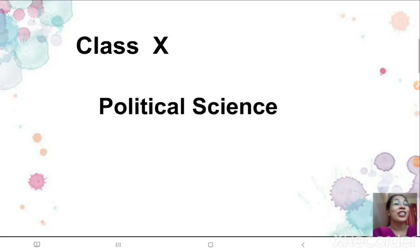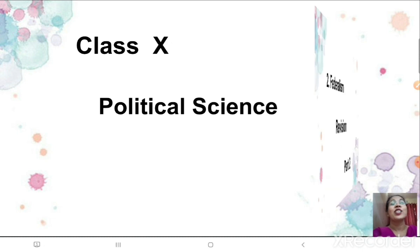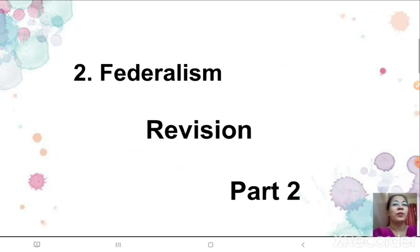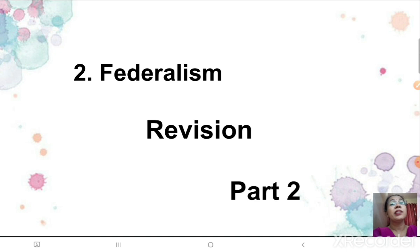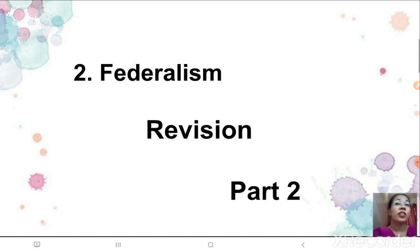Welcome back children to the second part of our revision of Class 10 Political Science Chapter 2, Federalism. In the previous part of our revision session, we have seen the meaning of federalism, the difference between the unitary system and the federal system, the key features of federalism, the types of federations — the coming together federation and the holding together federation — and about what makes India a federal country.